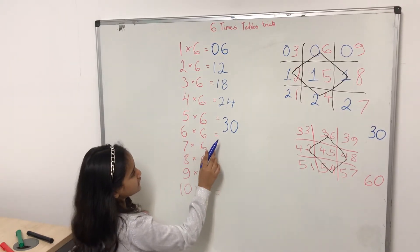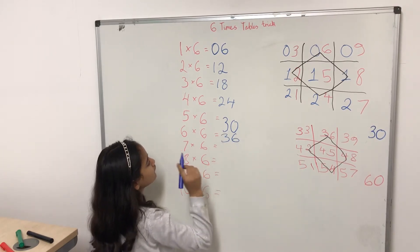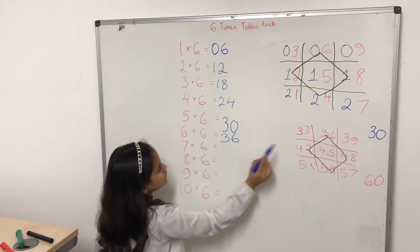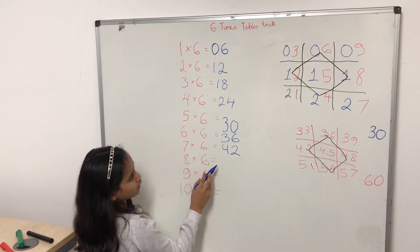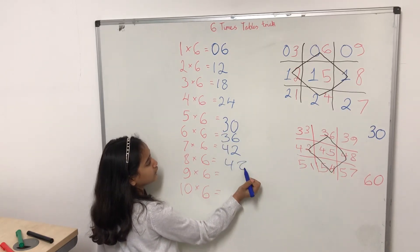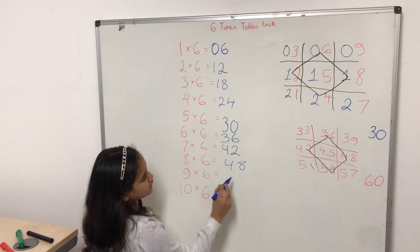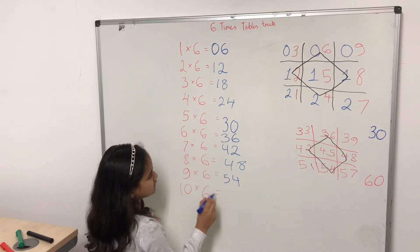Six times six equals thirty-six. Seven times six equals forty-two. Eight times six equals forty-eight. Nine times six equals fifty-four. And ten times six equals sixty.